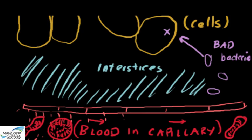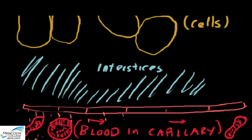We'll come back to the interstices when we talk about the inflammatory response, but for now I just want to outline the anatomy of the lymphatic system because of the importance of lymph nodes and lymphatic organs in the processes we'll be considering in the remainder of this module.